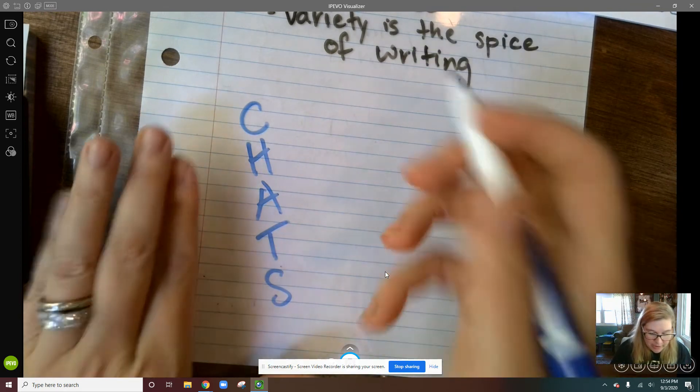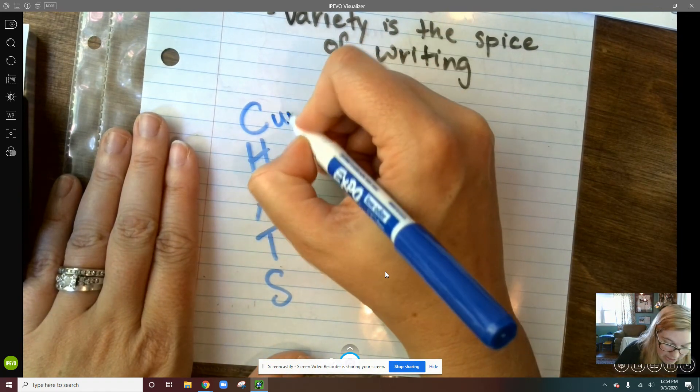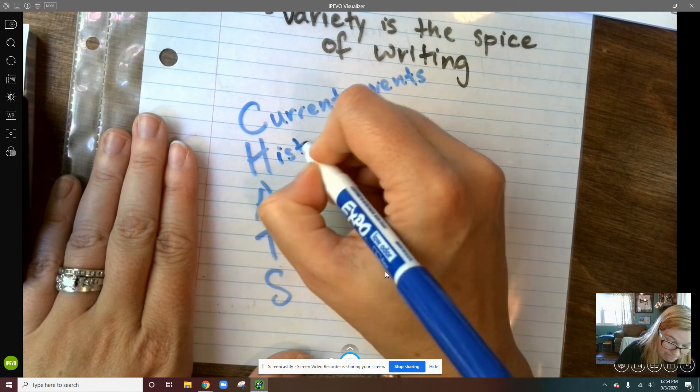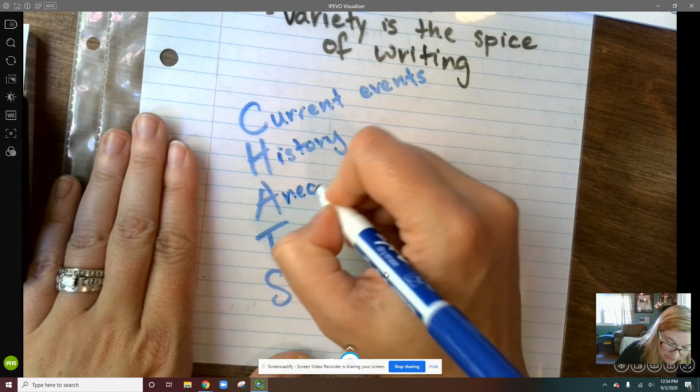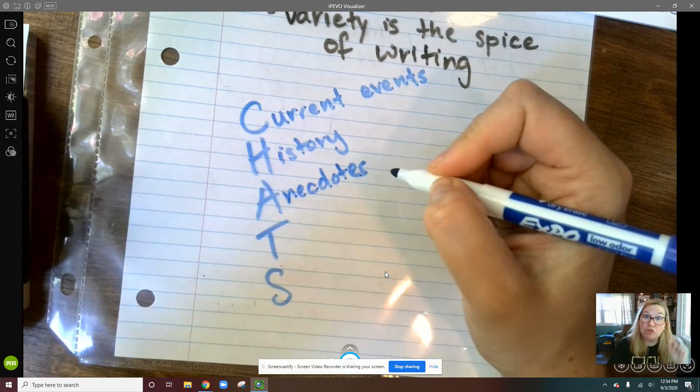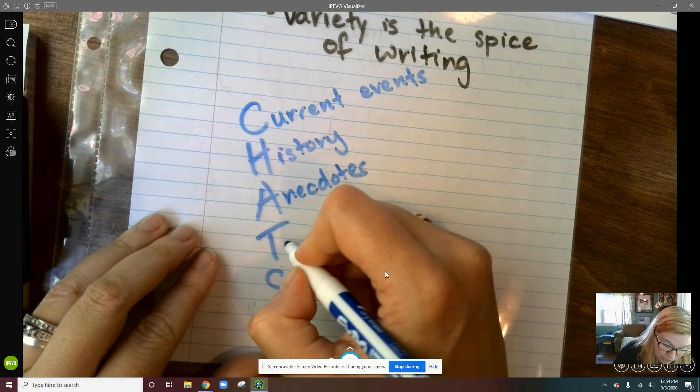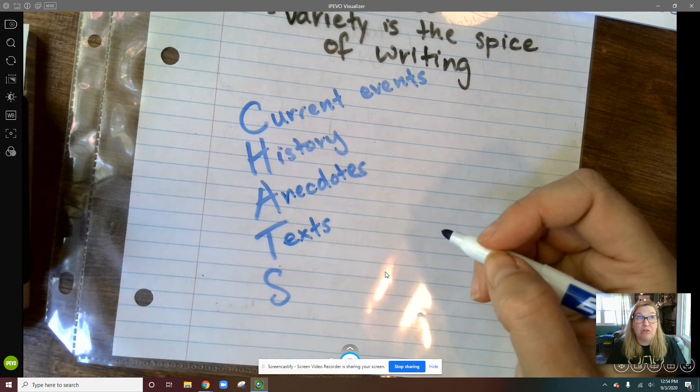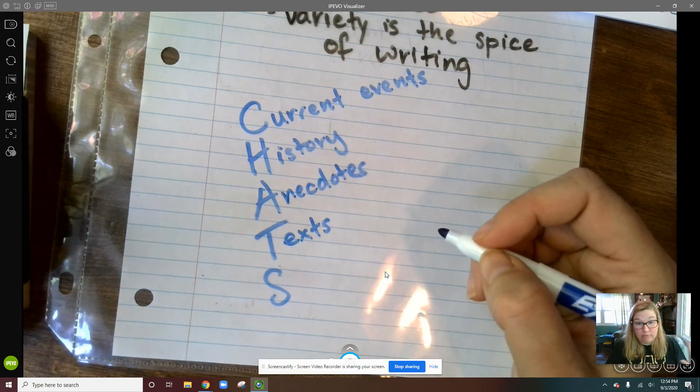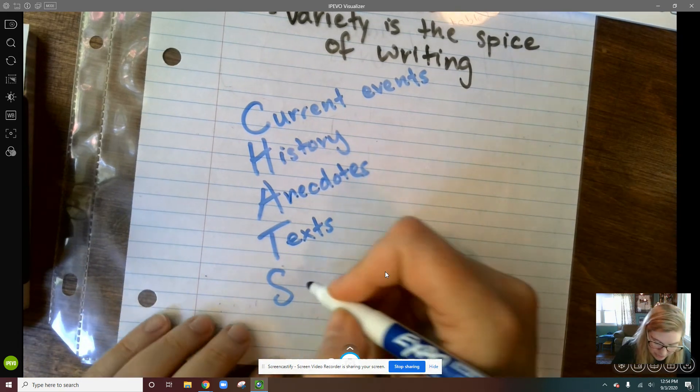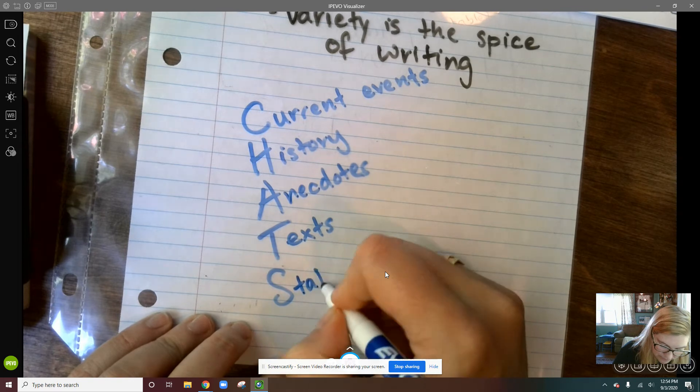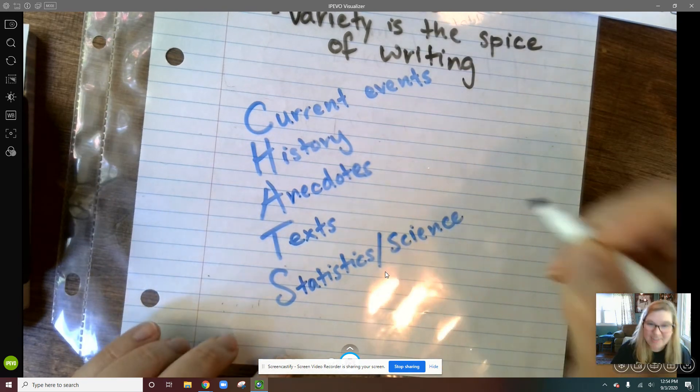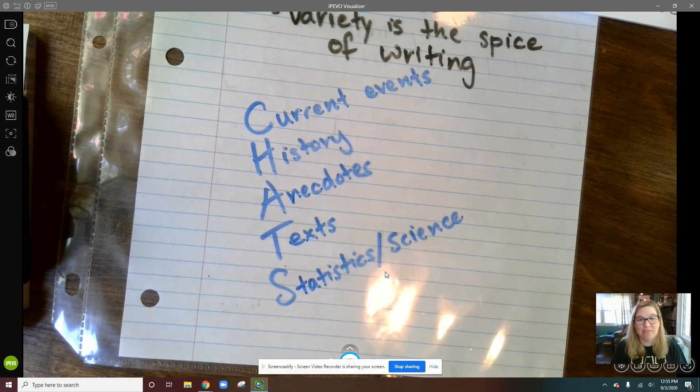So the types of evidence you can use to chat: you can have current events, you can use history, you can use anecdotes. If you don't remember what anecdotes are, those are short personal stories or experiences that you've had. You can use text, so that could be literature, that could be fiction, nonfiction, it could be a movie, a TV show, could be a song, could be a poem. That word text is sort of continual, right? Has a lot to it. And then you can also use either statistics or science, kind of group those into the same category there, so scientific data or statistics.